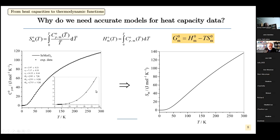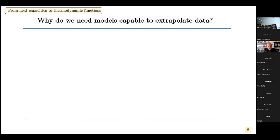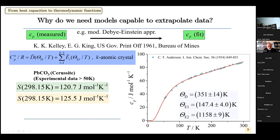With this accurate model, we can put all experimental data into six constants and then calculate all the other functions. What is also good with this Debye-Einstein approach is that it's possible to extrapolate data. Very often we don't have ultra-low temperature data — measurements only going down to 50 Kelvin — but this approach allows us to extrapolate and get all thermodynamic functions at room temperature.